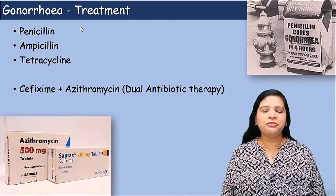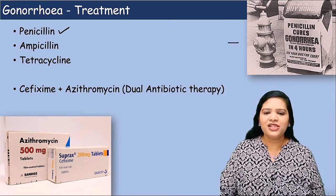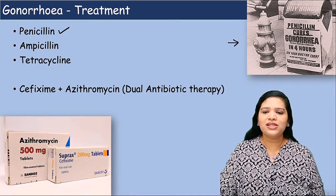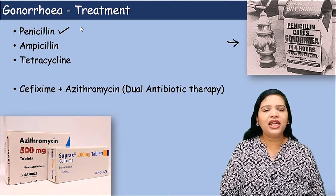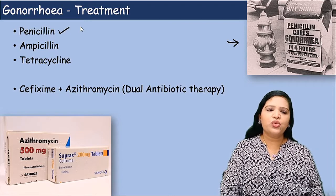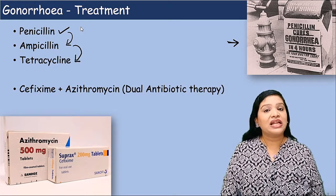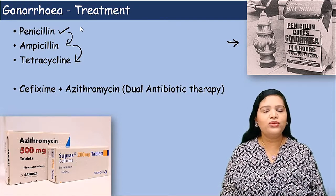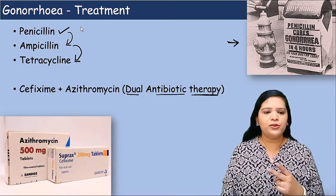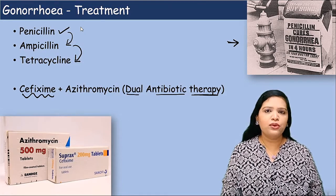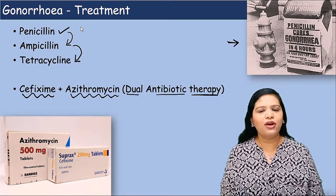The next topic is treatment. Previously, penicillin was the best antibiotic for gonorrhea — it was so effective that advertisements said 'penicillin cures gonorrhea in four hours.' But the bacteria started developing antibiotic resistance, so penicillin no longer works. We moved to ampicillin — again, bacteria developed resistance. Then tetracycline — again, resistance developed. Now the better treatment option for gonorrhea is dual antibiotic therapy: a combination of cefixime, which is a cephalosporin group antibiotic, and azithromycin. This combination of cefixime and azithromycin is the current dual antibiotic therapy for gonorrhea.